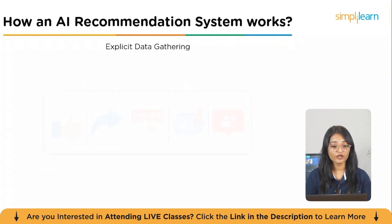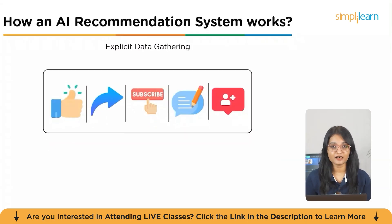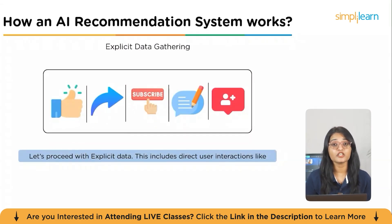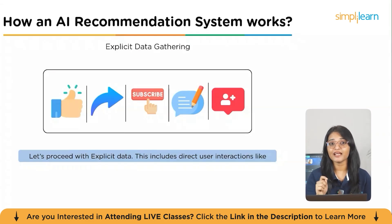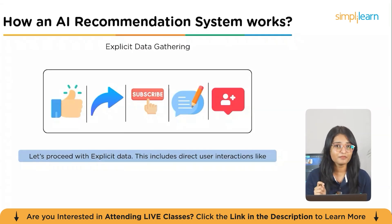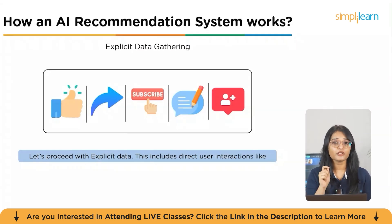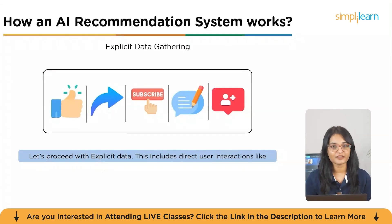Explicit data includes direct user interactions like likes, follows, shares, comments, and subscriptions. For example, if you've liked this video, now would be a great time to hit that thumbs up button and click that subscribe button — so the YouTube recommendation engine would show you more of our content.